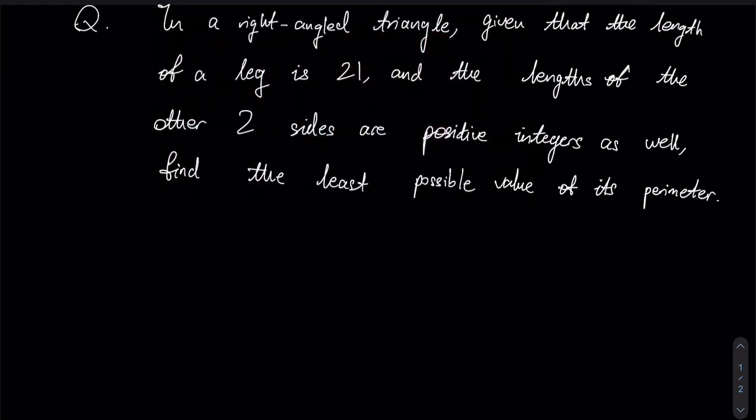Now we are given a right angle triangle and that the length of a leg, a leg referring to one of the sides which are perpendicular, being 21, and that the lengths of the other two sides are positive integers as well.